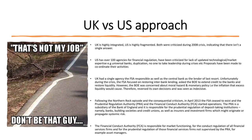The UK had a single agency, the FSA, responsible for regulation, in addition to the central bank as lender of last resort. During the crisis, the FSA was focused on restoring interbank lending and putting liquidity back into the system, and asked the Bank of England to extend credit to the banks. However, the Bank of England was concerned about moral hazard — its mandate was not to restore liquidity to the banks, and it was worried about the inflationary effects of that liquidity. So one day it said no, the next day it reversed its decision, and it was seen as indecisive and a poorly managed situation.